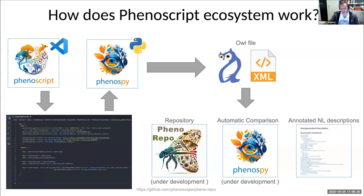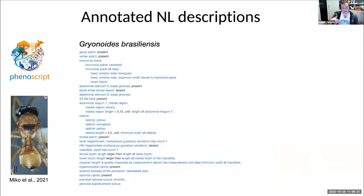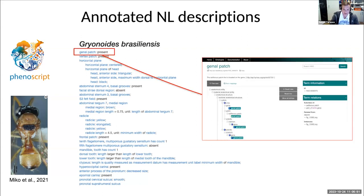Another application is to convert a Phenoscript description into a natural language description, which comes in Markdown HTML format. Here you can see annotated natural language descriptions generated from Phenoscript for agranoidus wasps. All anatomical terms in this description are hyperlinked, so if you click on a particular term, your browser will take you to the ontology lookup service where you can see the relationships of that term in ontology and its definitions.